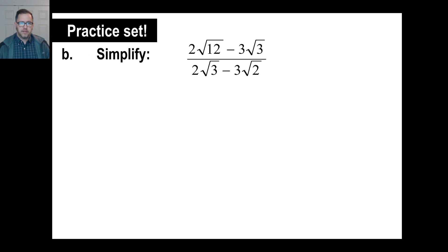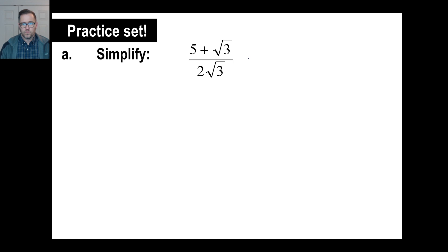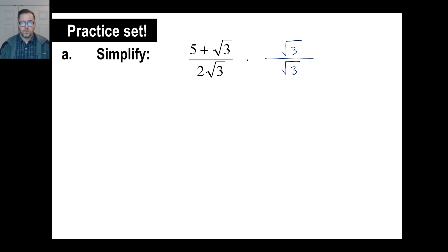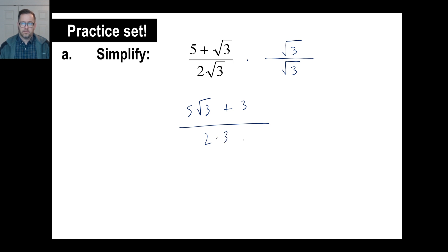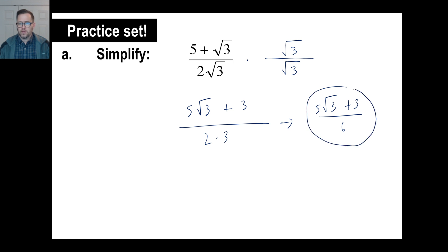Let's try practice set A and pause it. You might wonder why I didn't do two times square root of three on top and bottom — you can, but really two is already a rational number. The only thing you need to clean up is the square root of three. Either way, if done correctly and the fraction reduced, you'd get the same answer. So we got five square root of three plus three on the top, and the bottom is two times three, which is six. So the answer is five square root of three plus three over six. Checking if five, three, and six share a common factor — they do not, so that's as far as we can go.